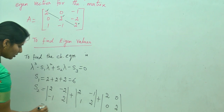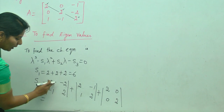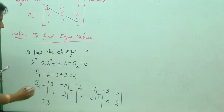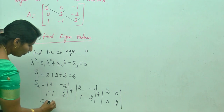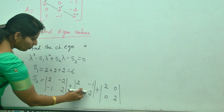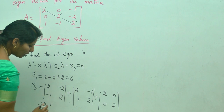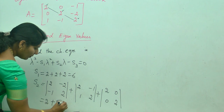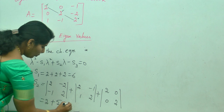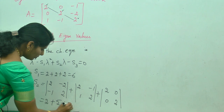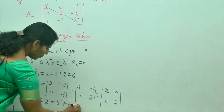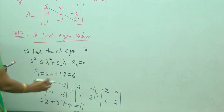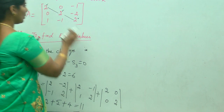Now simplify this by cross-multiplying. (4 minus 2) gives 2. Next, (4 minus minus 1) — minus into minus becomes plus — so 4 plus 1 gives 5. And (0 minus 0) gives... so 2 plus 5 plus 4 gives 11. This is the sum of the minors of the diagonal elements.